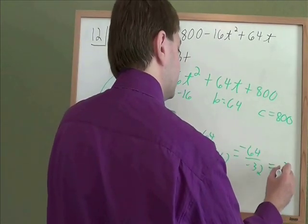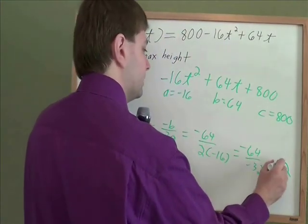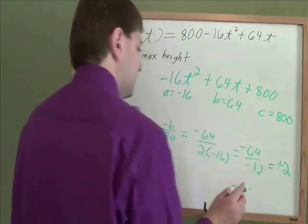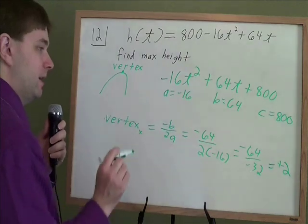64 divided by 32 ends up being 2. Negative divided by negative is positive. So positive 2 is the time that gives you the maximum height.